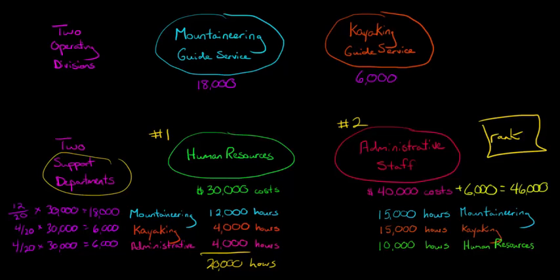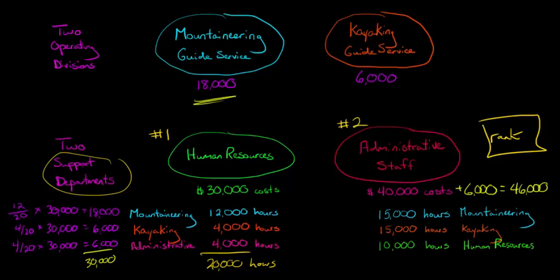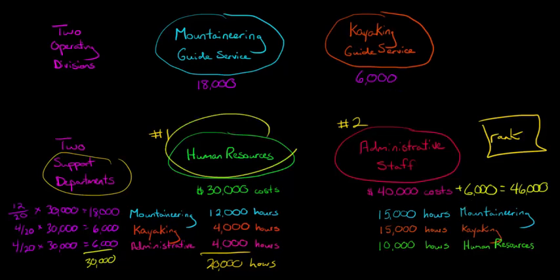So let's confirm: we've allocated the full $30,000 of HR costs. $18,000 went to mountaineering, $6,000 went to kayaking, and $6,000 went to the administrative staff support department. So we've allocated some of the HR costs to another support department — administrative staff.